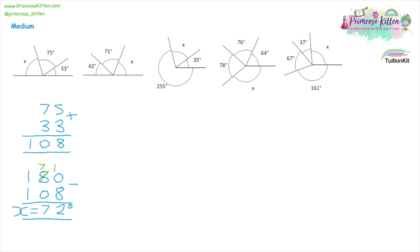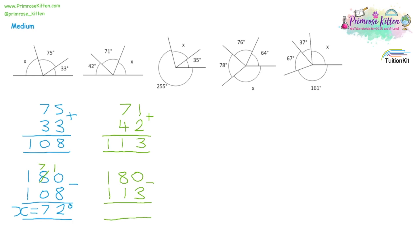Moving on to question two using the same method. Identify the angles you've been given: 71 and 42. We've been given two angles, so add them together: 1 plus 2 and 7 plus 4 gives us 113. Identify the total — it's a straight line again, so 180. Take away the 113. Borrow one to start: 10 take away 3, 7 take away 1, and 1 take away 1 is zero. Our missing angle is 67 degrees.